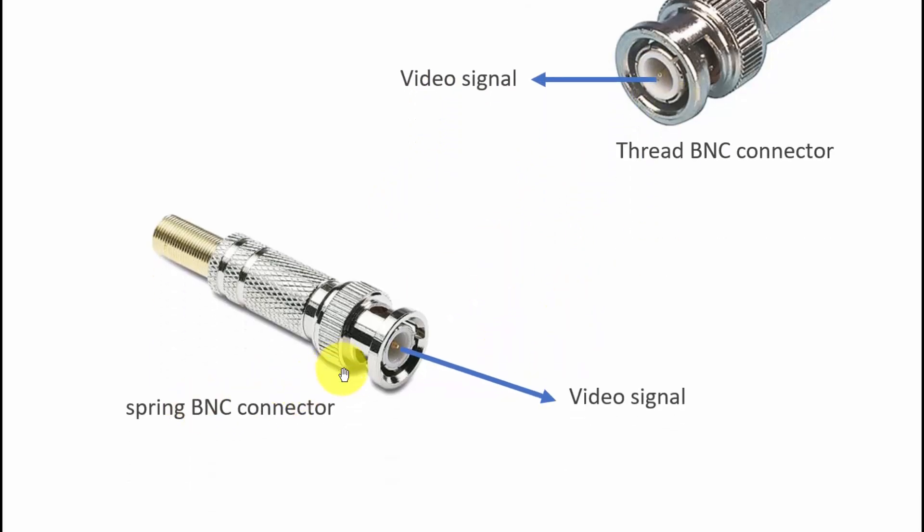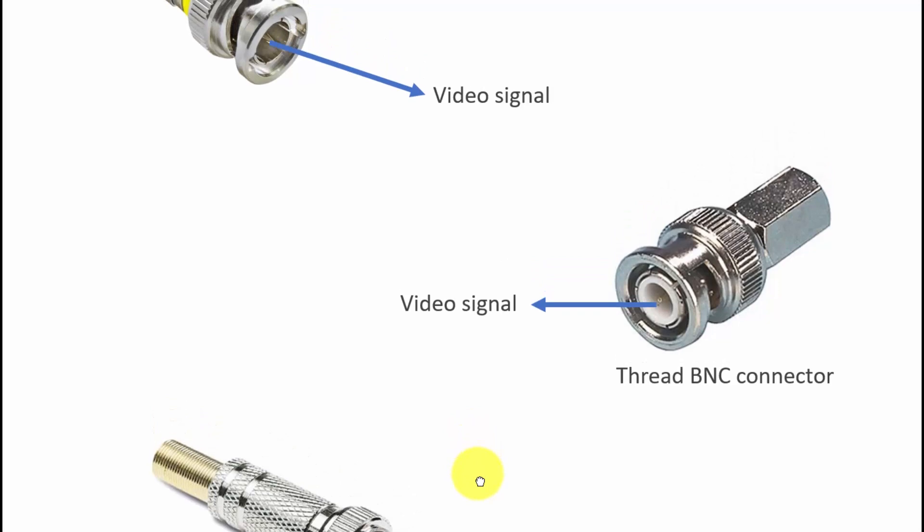This is also a different way you can have your connector with the springs, and all of those connectors are used for coaxial cables. It doesn't matter if you are using RG59 or RG11, the different kinds or types of coaxial cables—you can use BNC connectors like these ones.